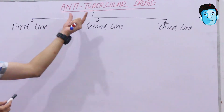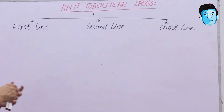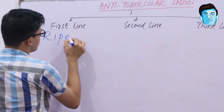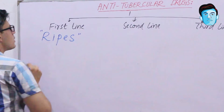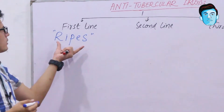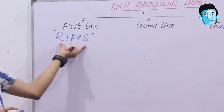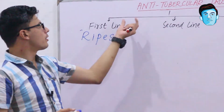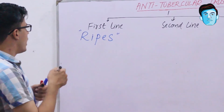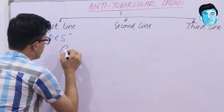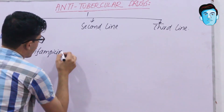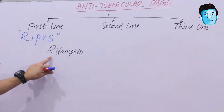Now let's talk about first-line anti-tubercular drugs. For that we have a mnemonic: RIBES. Every single letter indicates a particular drug in the first-line category. R stands for Rifampicin (Rifampin).